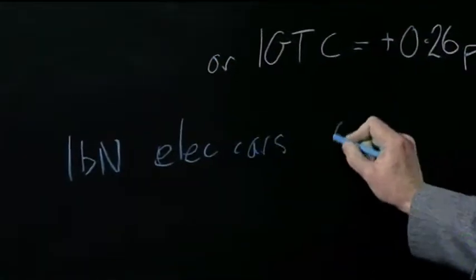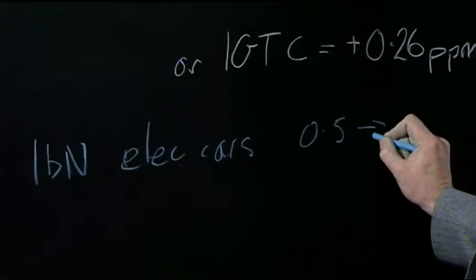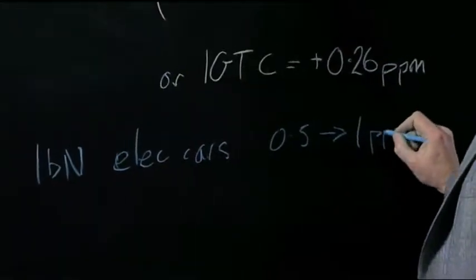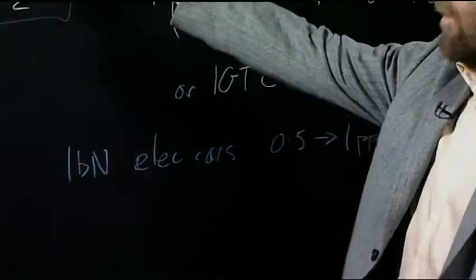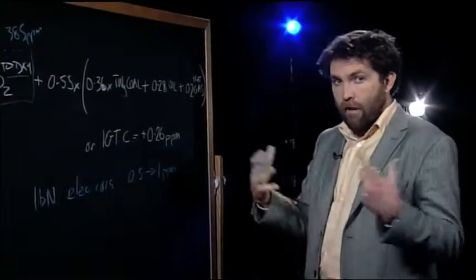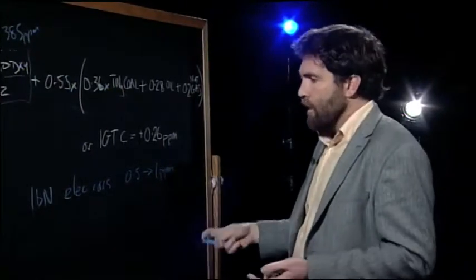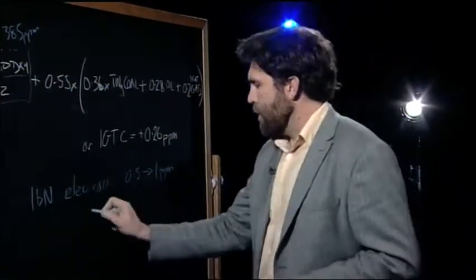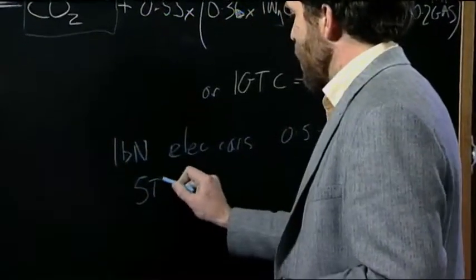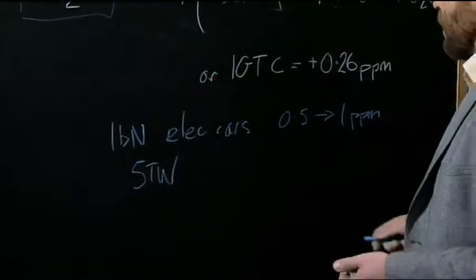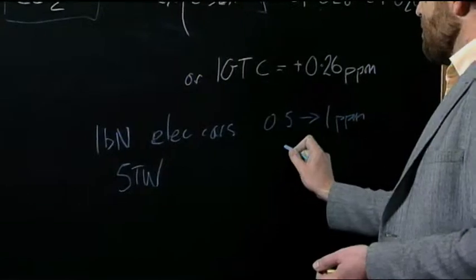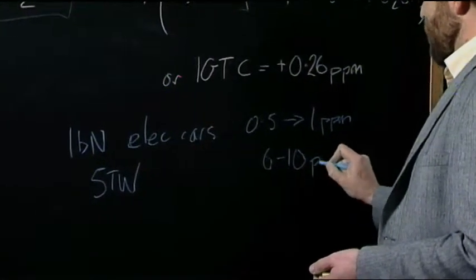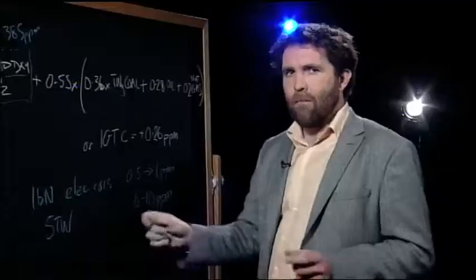If we did 5 terawatts of solar energy, it would probably add 5 terawatts of solar energy generating capacity. It's probably going to add 6 to 10 ppm to the atmosphere.